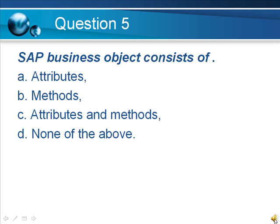Question 5. An SAP business object consists of: A. Attributes, B. Methods, C. Attributes and methods, D. None of the above.